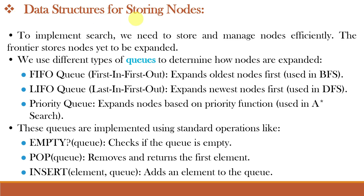Let us understand the data structures for storing nodes. To implement search, we need to store and manage nodes efficiently. The frontier is the set of nodes waiting to be expanded, and we use different types of queues to determine how nodes are expanded. The FIFO queue — first in, first out — expands the oldest nodes first, in the order they were added, and it is used in BFS, that is breadth-first search. The LIFO queue — last in, first out — expands the most recently added nodes first and it is used in DFS, that is depth-first search.